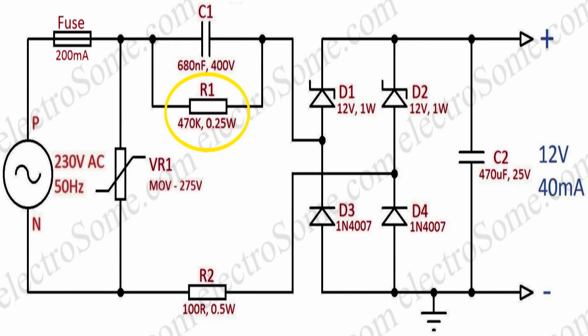The resistor R1 is the bleeder resistor intended to discharge the capacitor C1. When the supply is switched off, it will prevent shocks due to capacitor charge.